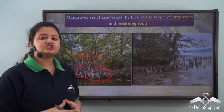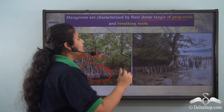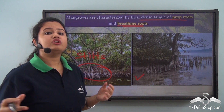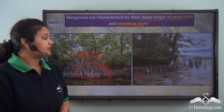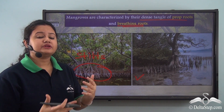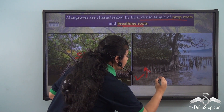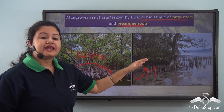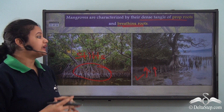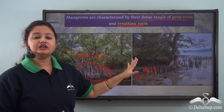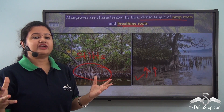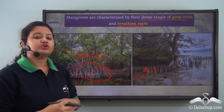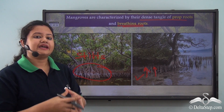Another unique feature of the mangroves is that they have breathing roots. We know the soil in these regions always remains swampy and moist, so breathing roots, which are respiratory roots, come out of the soil in order to absorb oxygen from air. Thus, these breathing roots enable the trees to breathe. In the presence of prop roots and breathing roots, mangroves can easily survive in coastal regions. These adaptive features help a mangrove to thrive in coastal or deltaic regions.